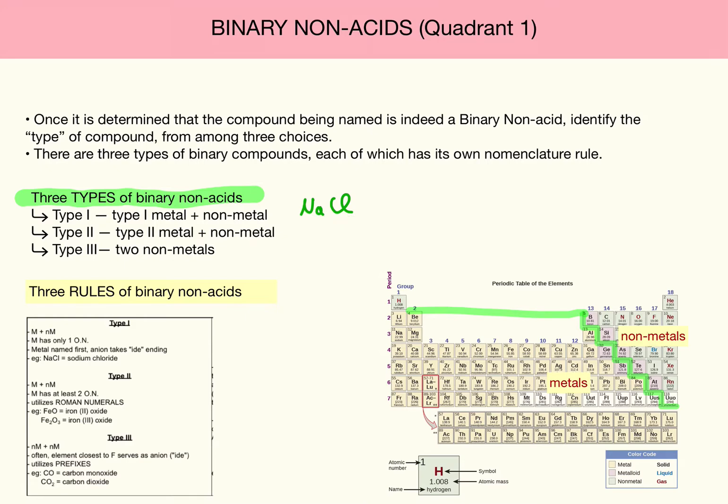Not to be confused with type 2, which is also one metal and one non-metal, but it's made with a special metal. For example, Cu can combine with chloride to make copper chloride, or it can combine with chloride to make a different compound. So because the metal copper can actually combine with a non-metal in two or more ways, it's called a type 2 compound.